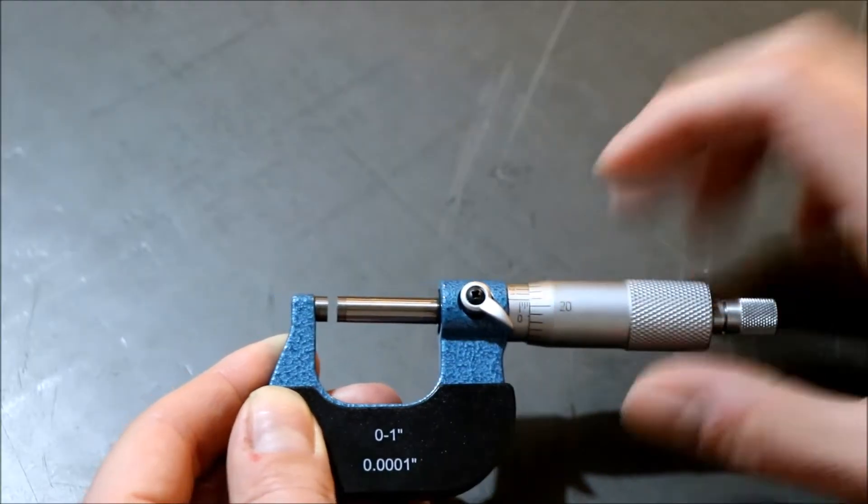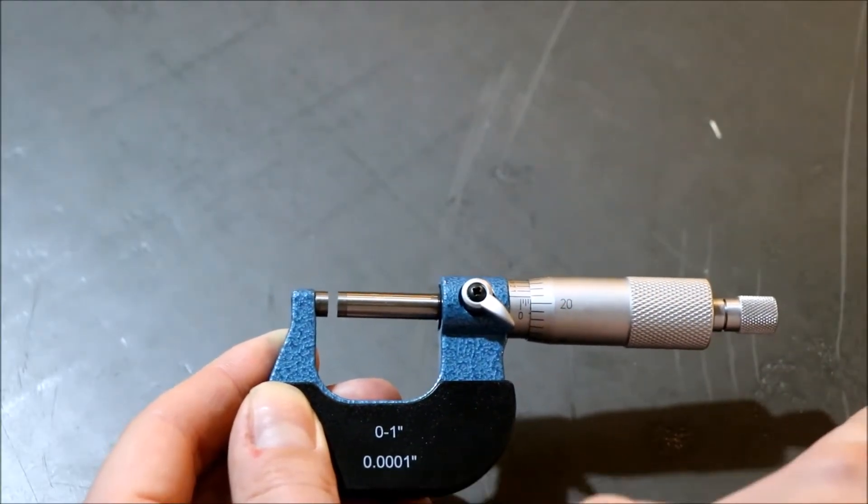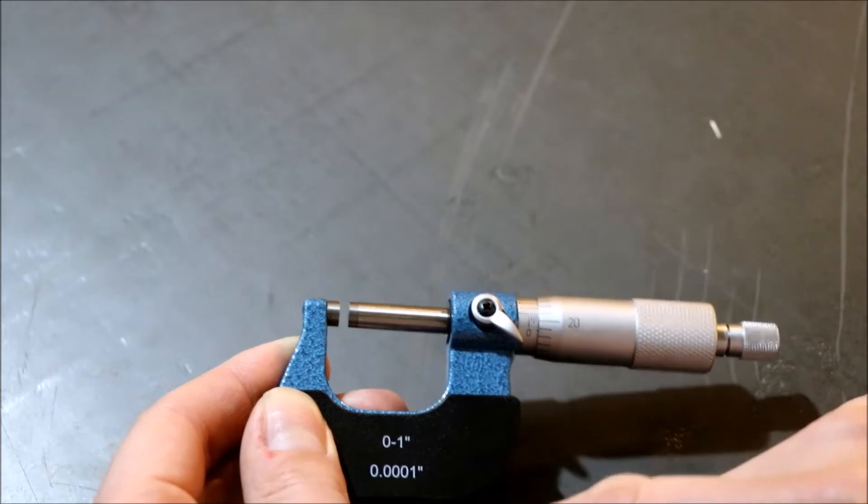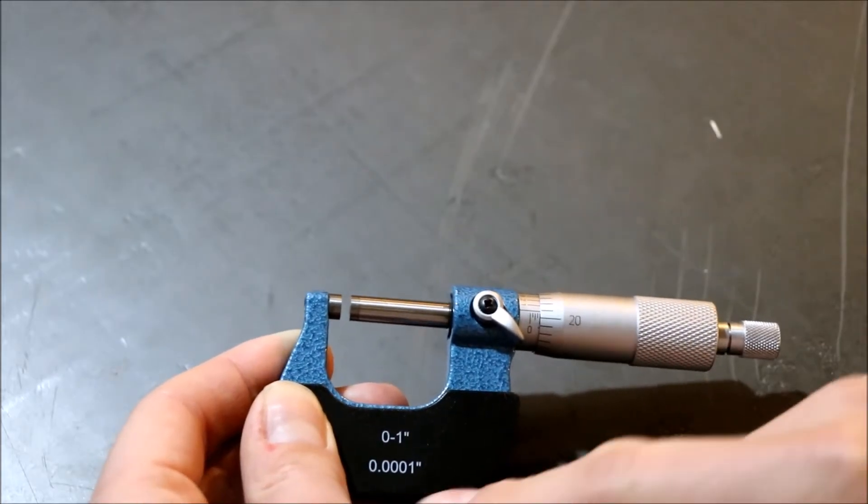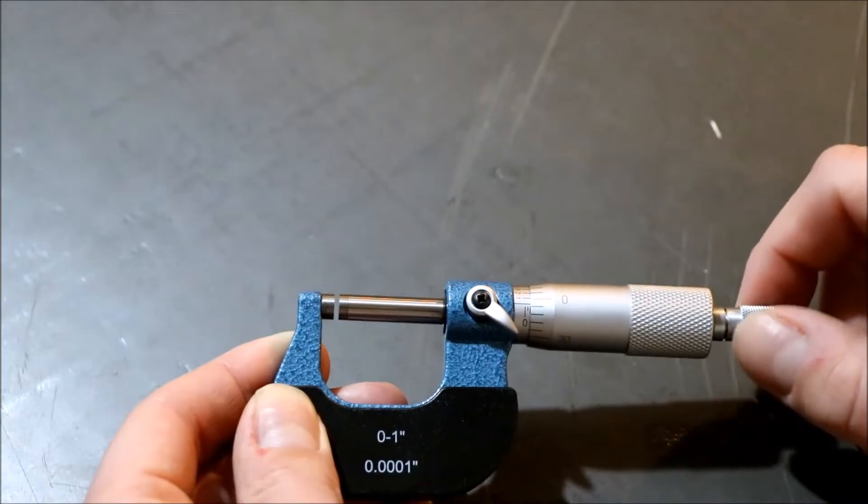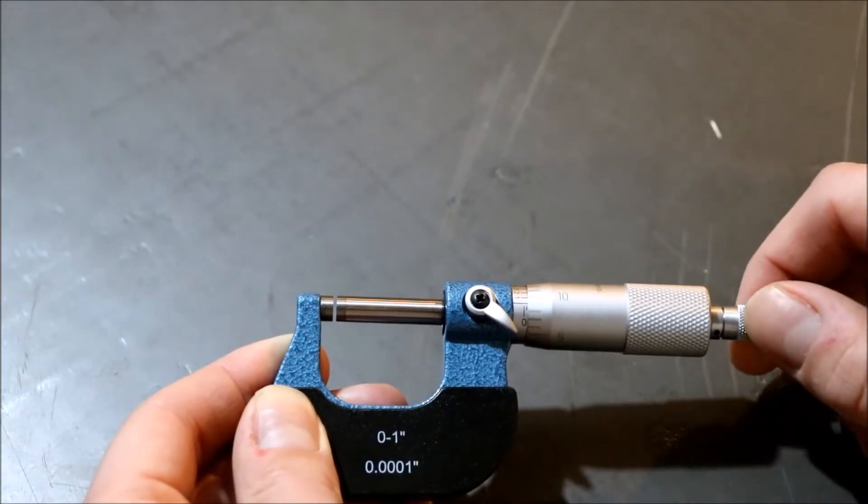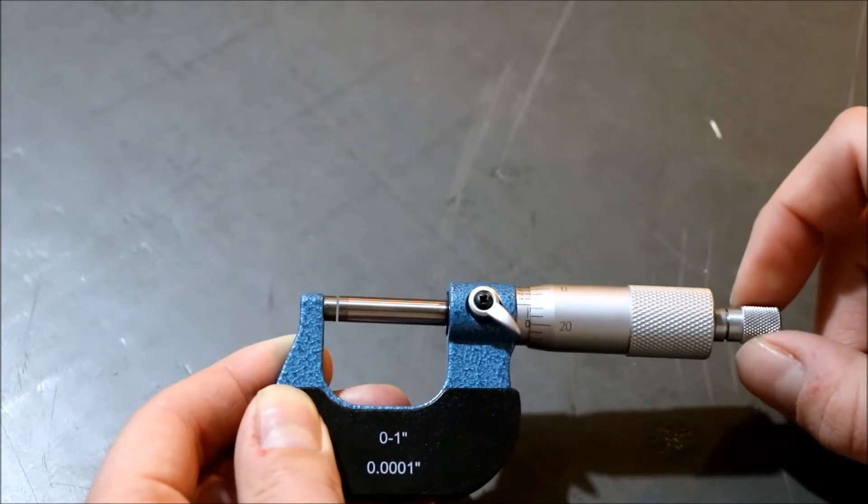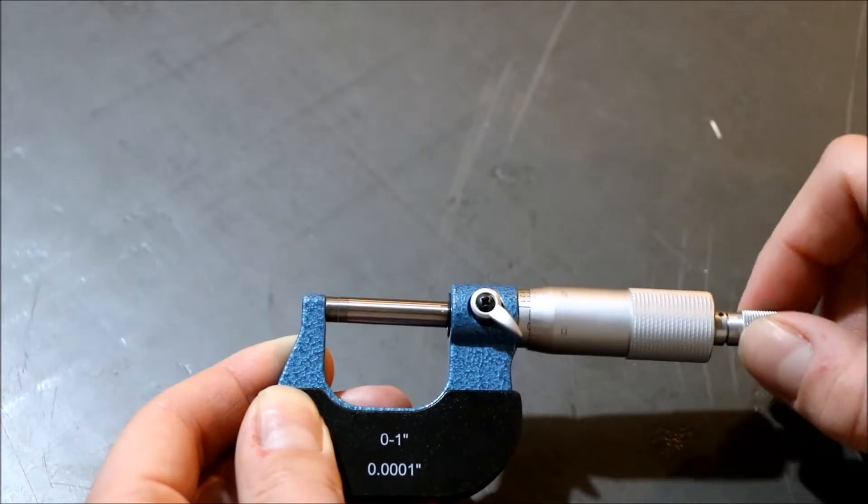if you're measuring this far out. This one measures in increments of one ten-thousandth of an inch, so it goes out four decimal places. So here we go, I'll just bring it in until